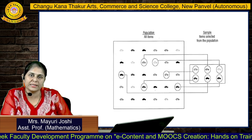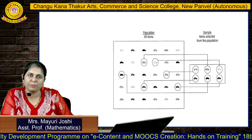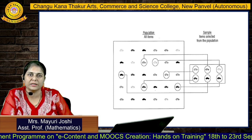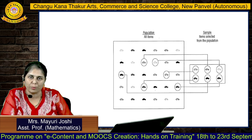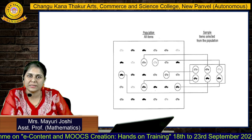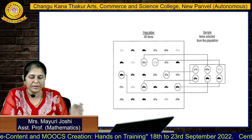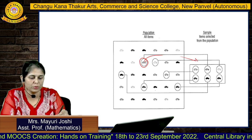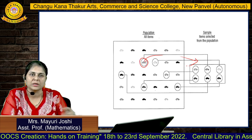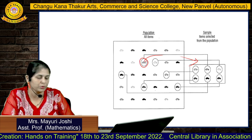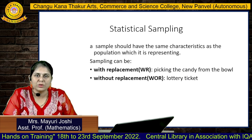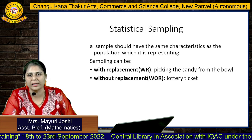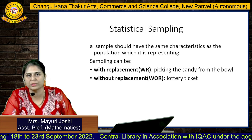This is the example where we are defining population and the sample. The square is defined for the population and only the circled elements are defined — these are collected into the sample. This is how we are going to collect the sample. Statistical sampling: there are various methods to define how we are going to select the sample.